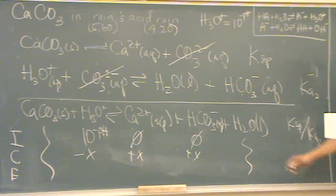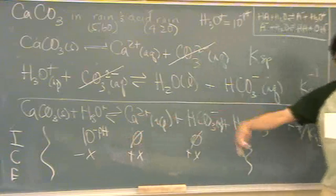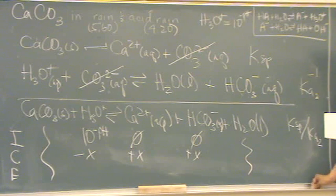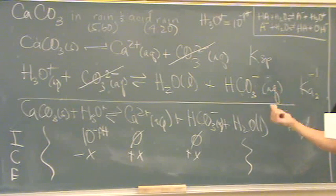What I did when I solved it, I just left it as 10 to the minus pH, so the very end. And then I plugged in the numbers at the very end. But, you can do it however you like. Any questions on this one?